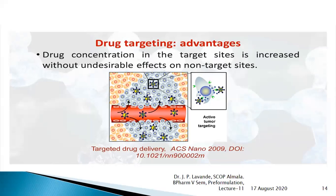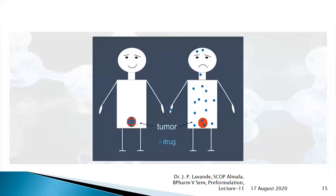Polymers are useful in drug targeting. The drug concentration at target sites is increased without any undesirable effect on non-target sites. The advantage is also seen in the form of improved patient compliance.